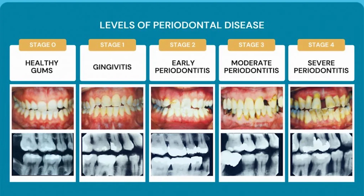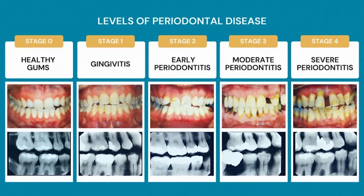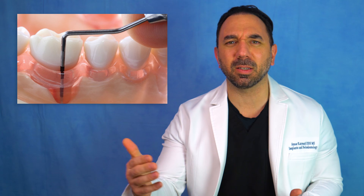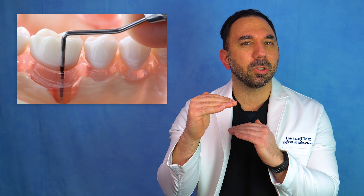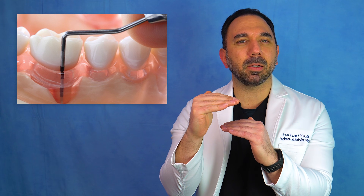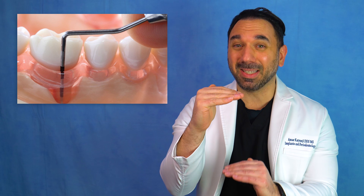Periodontal disease is when the infection moves past the gums and into your bone. It's inflammation — a problem that starts to occur as you let that bacteria accumulate around your teeth. What's going to happen is you're going to lose bone, and as you lose bone you create pockets around your teeth. If you've been to the dentist, they start poking around your teeth with numbers — those numbers are a measurement of where the gum tissue is in relationship to the bone. As periodontal disease progresses, the bone resorbs and you get deeper and deeper pockets that harbor different types of bacteria.